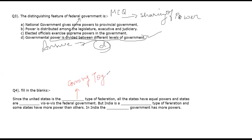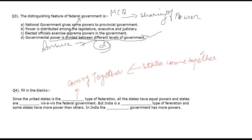It is a 'coming together' type of Federation. Please note it very carefully. The United States of America and Canada are coming together type of federations, because the states come together to form a country. The states came together and built an entire nation — and that is why it is called the United States. So the answer for the first fill in the blank is: the United States is a 'coming together' type of Federation.